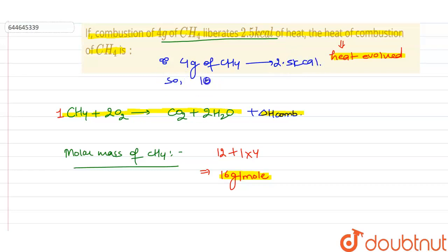so 16 gram, that is one mole of CH4, will give 2.5 times 16 divided by 4.